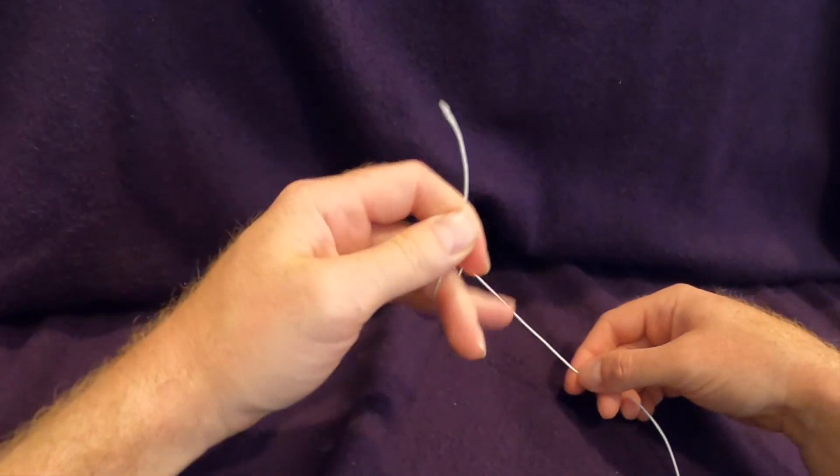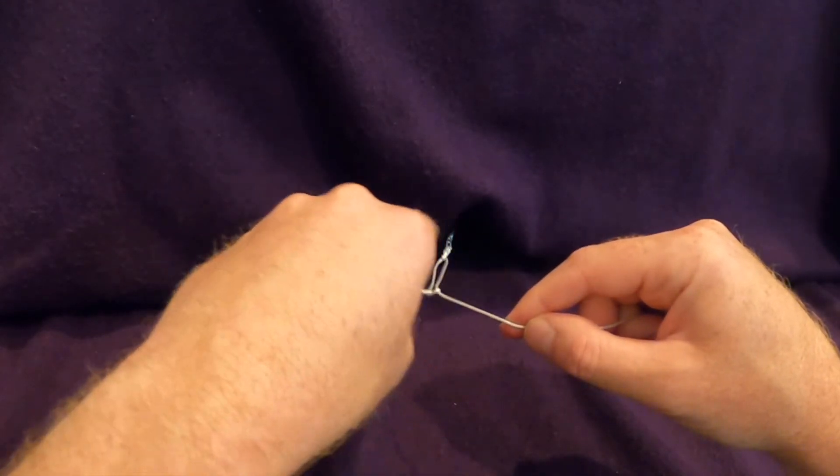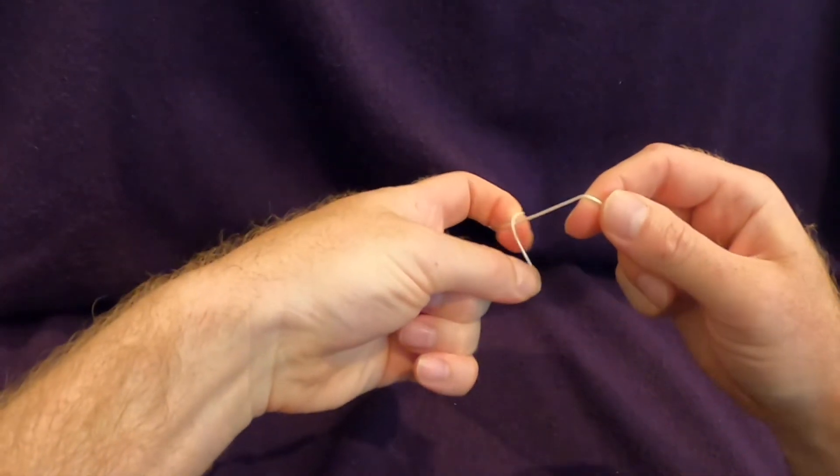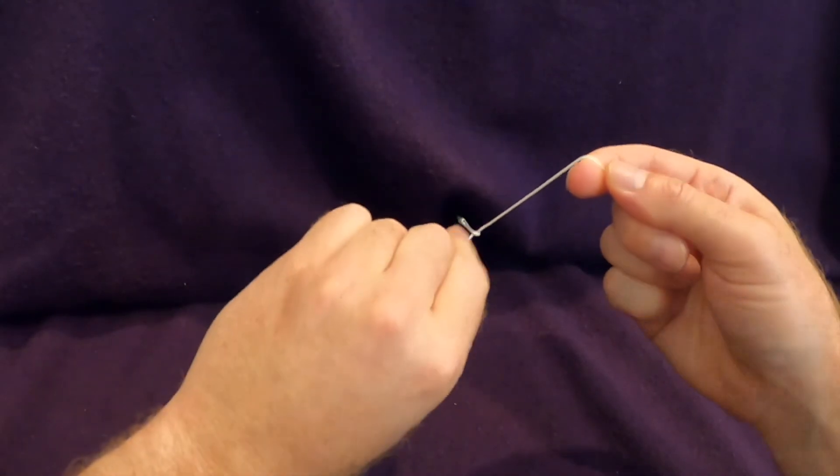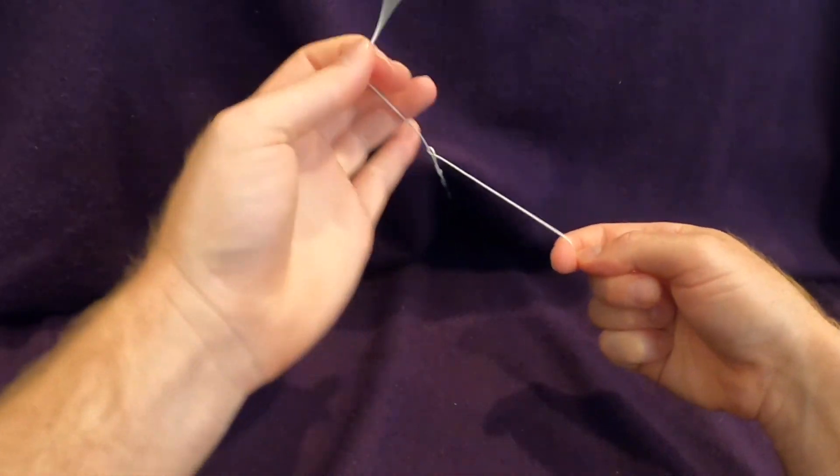Left handed knots are essentially the same thing except the roles of the hands are reversed. This is just one variation of the one hand technique. There are many other different ways to do this and it's important to practice on a shoelace or string before trying this in the operating room.